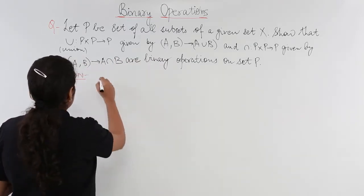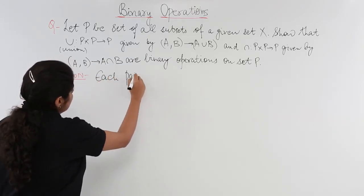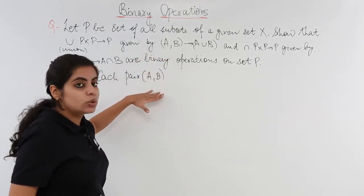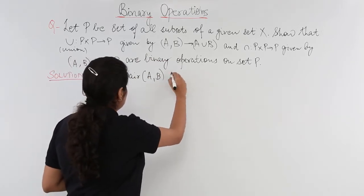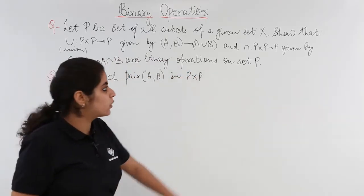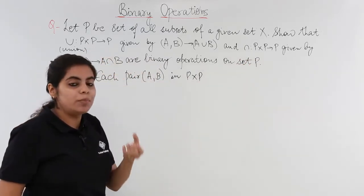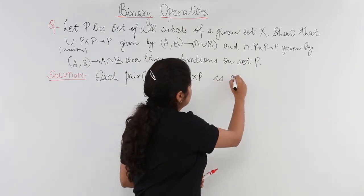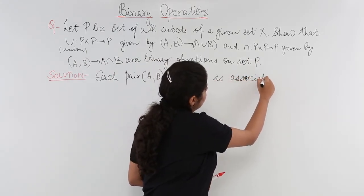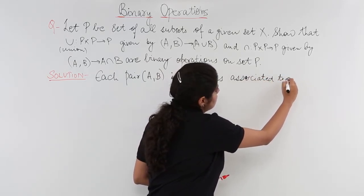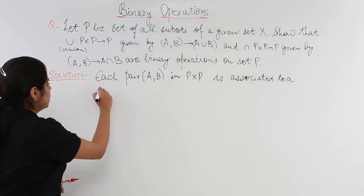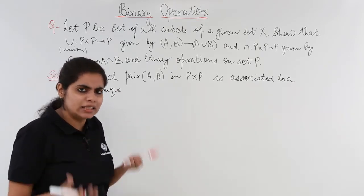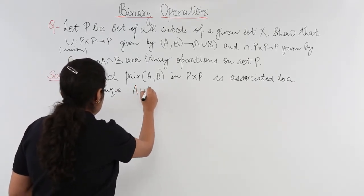Let's write what is the logic. Each pair AB, because an ordered pair AB is given to me. So each pair AB in P x P, where P x P is the domain, is associated to a unique element or category of A union B in P.